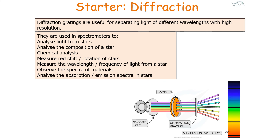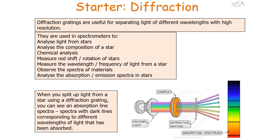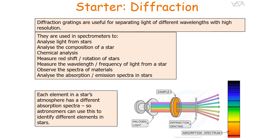Diffraction gratings are used in spectrometers to analyse light from stars, analyse the composition of stars, do chemical analysis, measure the redshift or rotation of stars, measure the wavelength and frequency of light from a star, and observe the absorption and emission spectra of stars. When you split up light from a star using a diffraction grating, you can see an absorption line spectra. The dark lines in the spectra correspond to different wavelengths of light that have been absorbed, and each element in a star's atmosphere has a different absorption spectra, so astronomers can identify different elements.